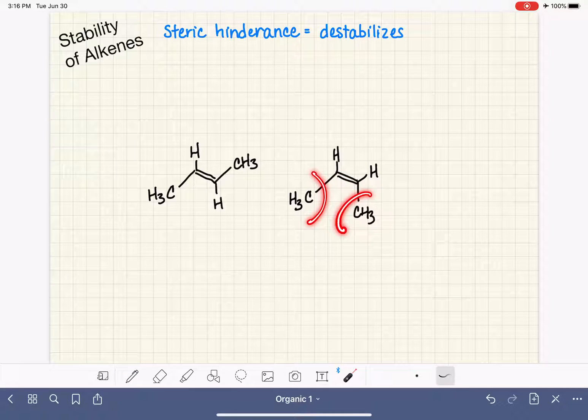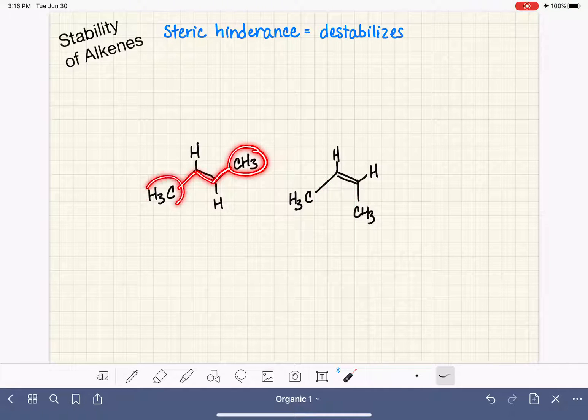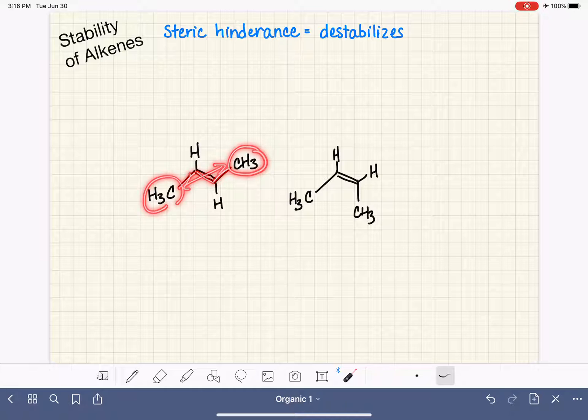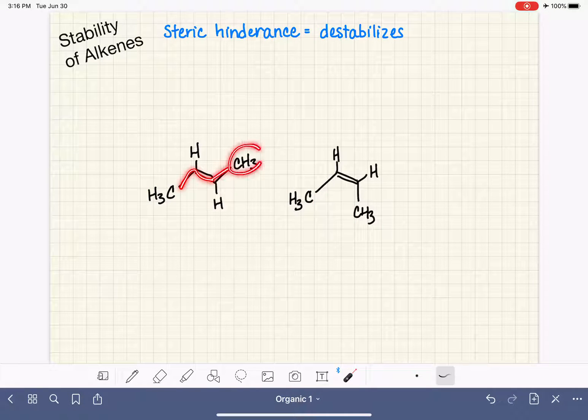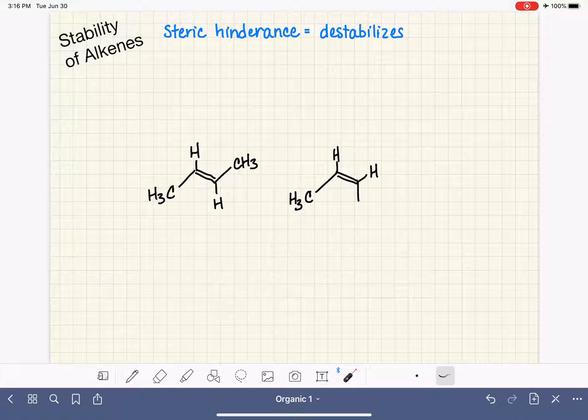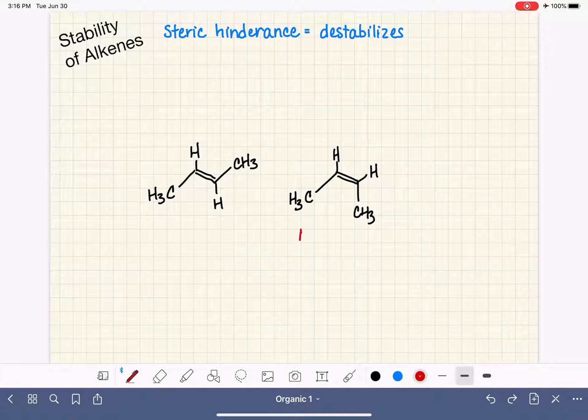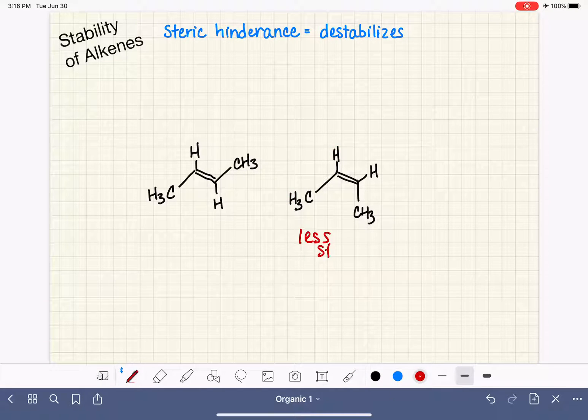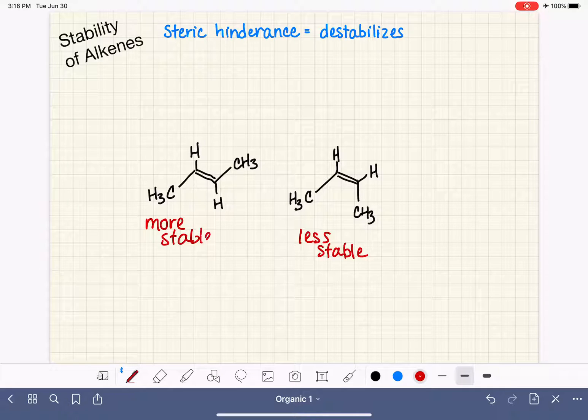The cis alkene, which has more crowding or more steric hindrance than the trans alkene, because in the cis alkene the methyl groups are closer together, and in the trans alkene the methyl groups are further apart. The cis alkene, which is experiencing steric hindrance, is less stable than the trans alkene, which is more stable.